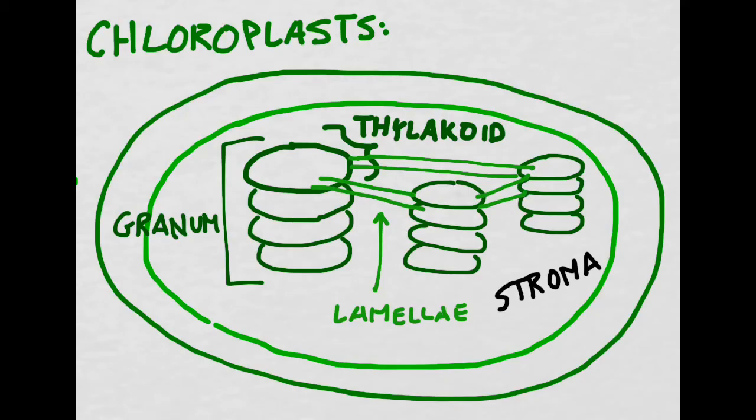The area inside the chloroplast that is not part of the thylakoids, the grana, or the lamellae is called the stroma. Don't forget that the thylakoids are the sites of the light-dependent reactions, whereas the stroma is the site of the light-independent reactions. So the products of the light-dependent reactions are going to need to exit the thylakoids and enter the stroma in order for the second part of photosynthesis to occur.